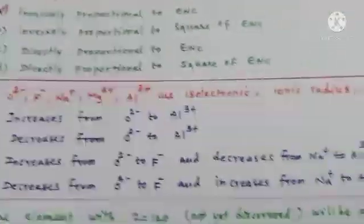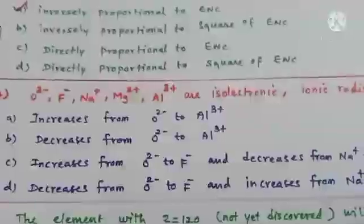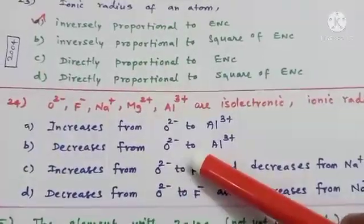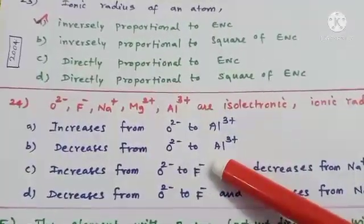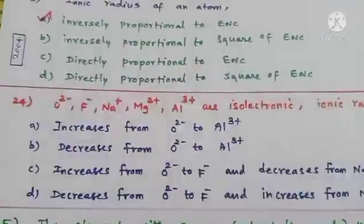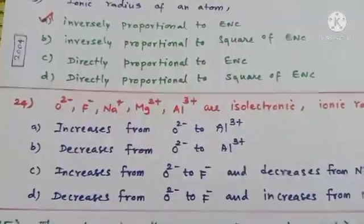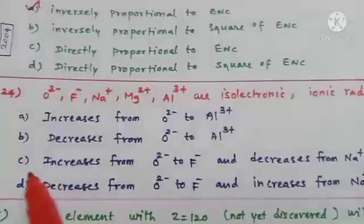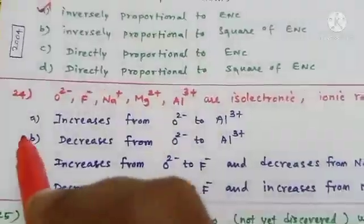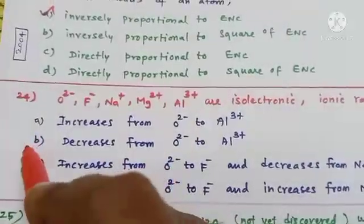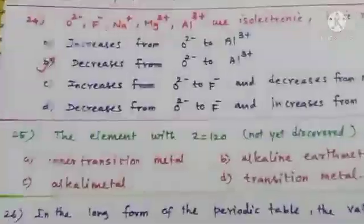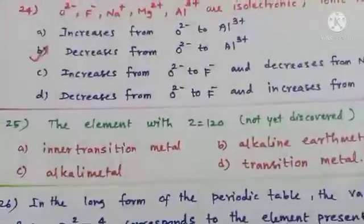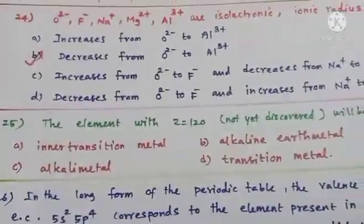From O²⁻ to Al³⁺ there is a gradual decrease in ionic radius. So option B — ionic radius decreases from O²⁻ to Al³⁺ — is the correct answer.